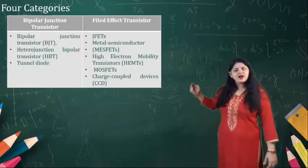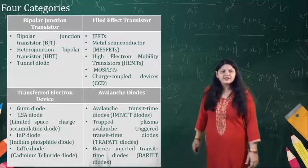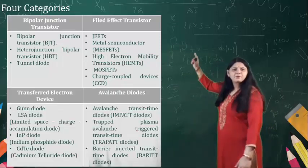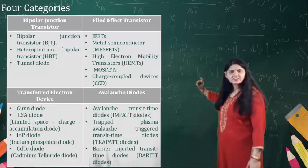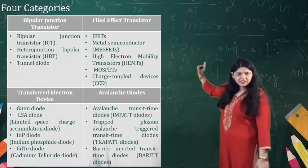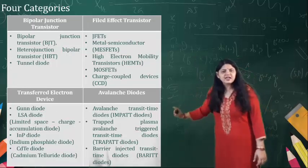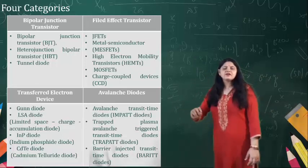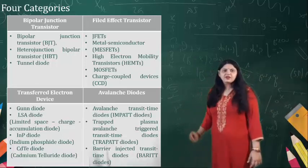So now there are four different categories. One is using the bipolar junction transistor, field effect transistor, transport electron devices, and avalanche diode.